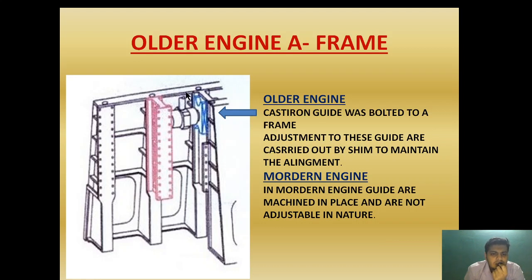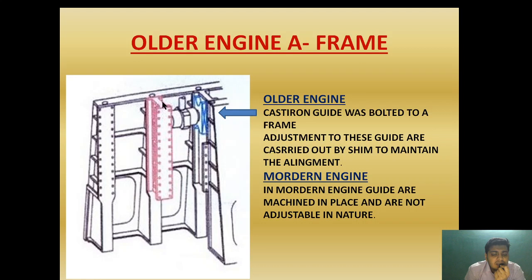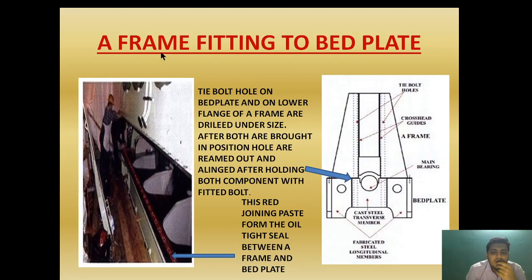In older engines, the crosshead guide arrangement was not made within the A-frame — it was bolted to the A-frame structure, and clearance was adjusted using shims. Cast iron guides were bolted to the frame, with adjustment carried out by shims to maintain alignment. In modern engines, the guides are machined in place and are not adjustable, as they are provided during construction, eliminating the need for shims.